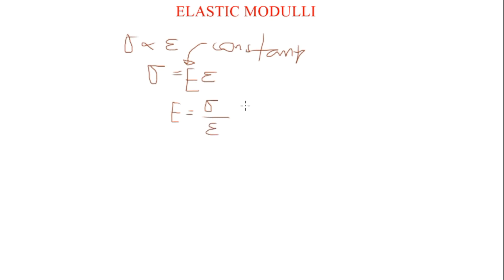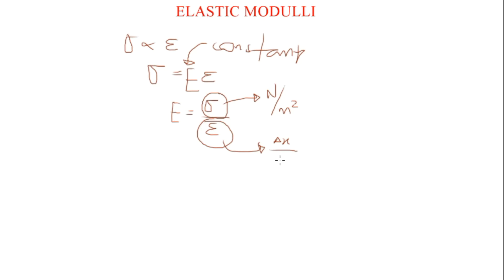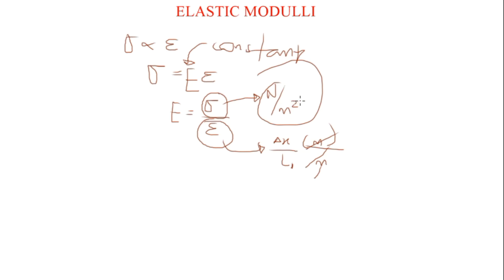The elastic modulus has a unit of Newton per meter squared, simply because the unit of stress is Newton per meter squared. Stress is force over area. The strain has no unit because strain is the fractional increase in the length of a material — it is the ratio of the extension to the original length. Since both are in meters, they cancel out. So the unit of elastic modulus is Newton per meter squared.